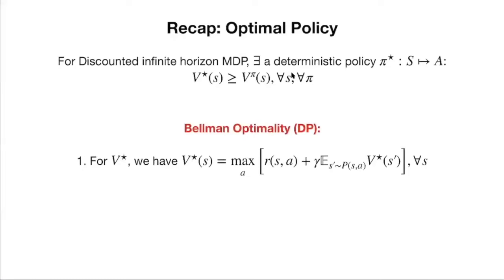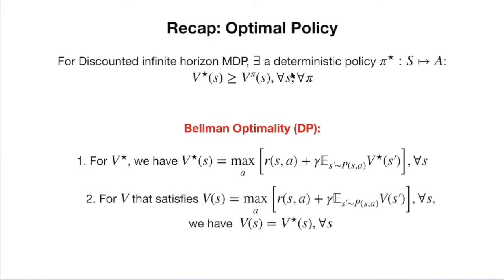We talked about Bellman optimality, which is one of the key properties of Markov decision processes. For the optimal value function V-star, it satisfies a dynamic programming-style consistency equation. For any function V that satisfies this Bellman consistency equation, we proved that this function must equal the optimal value V-star.